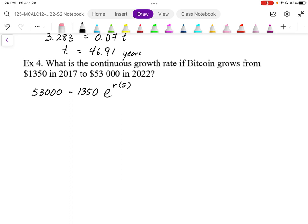So then again, I'm going to solve for the exponential. I'm going to do $53,000 divided by $1,350. And I end up with, as a simplified fraction, 1060 over 27, which is about 39.25.